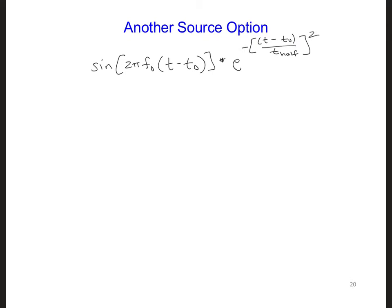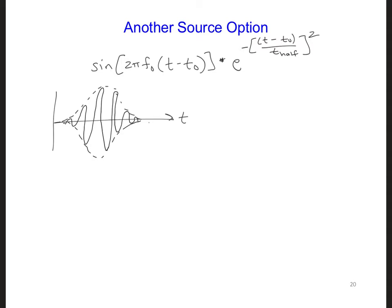It looks like this in time. If I were to plot versus time, I could put a Gaussian — trying to make it symmetrical — and then we'll have the sinusoid, something like that. This width is 2 times t_half. At this width, the amplitude is 0.368 if we assume a maximum amplitude of 1. So t_half is measured relative to t₀, which occurs at the center of the Gaussian.